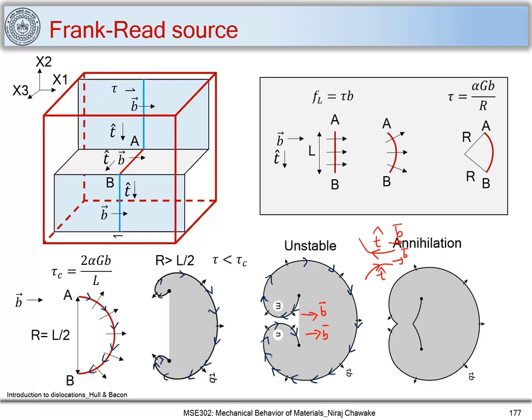Again tau is applied, causing the dislocation segment to move and form another loop. These two pinned points at A and B act as a dislocation source, repeatedly generating loops. This is nothing but a Frank-Reed source operating in a material.